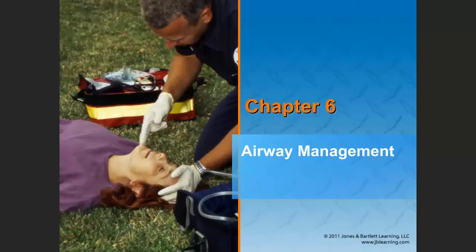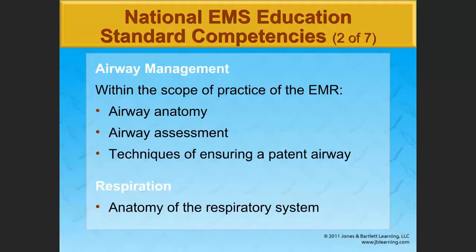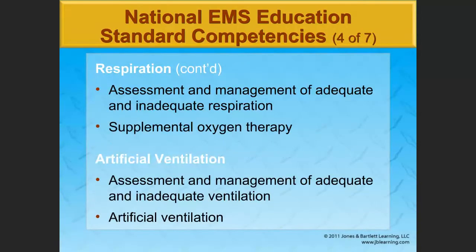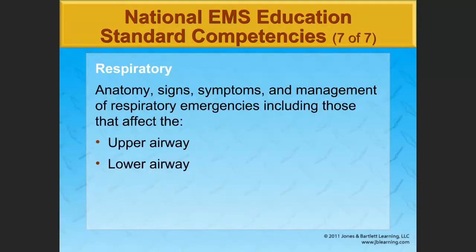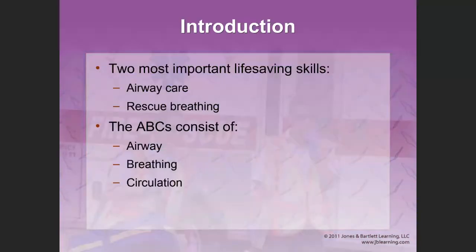Airway management is chapter six and it's one of the most important chapters in the EMR textbook. It's one of the most important chapters to the fundamentals of managing a critical patient. The two most important life-saving skills you can learn as an EMR are assessing and managing the airway — that's the upper airway — and rescue breathing, which is managing ventilations.